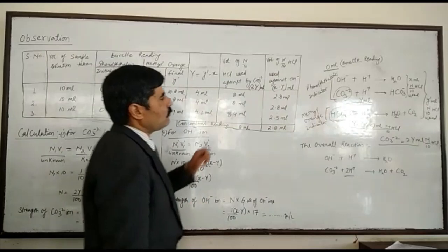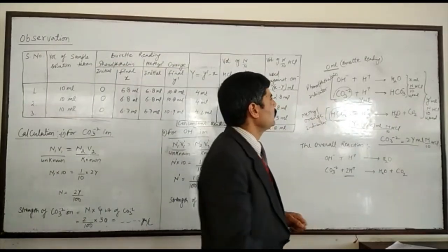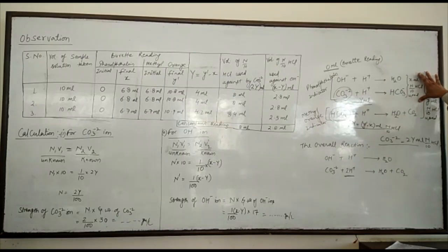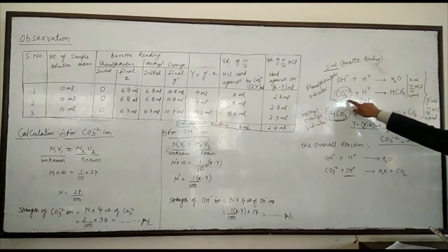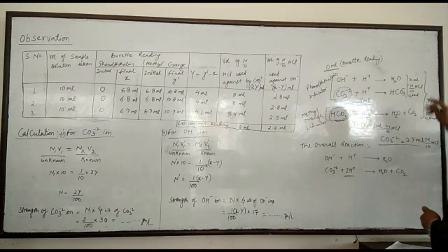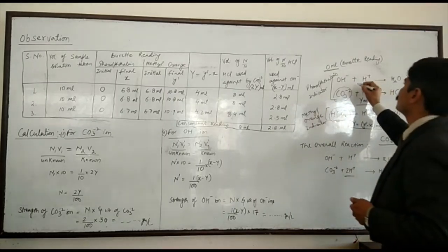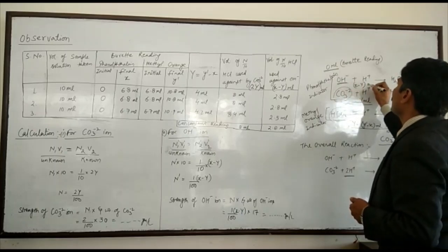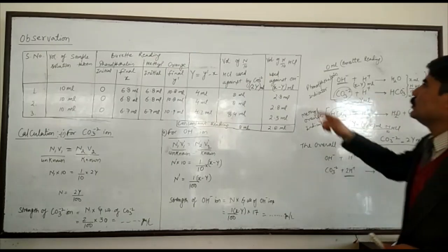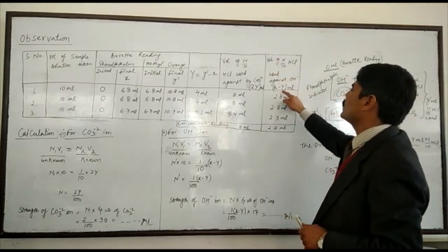Now, what is the volume required for the hydroxyl ion? For the phenolphthalein indicator, the volume of acid required is x ml. From this, the carbonate required capital Y ml. So the remaining volume for the hydroxyl ion is x minus Y. Therefore x minus capital Y ml of N/10 HCl is used for the hydroxyl ion.